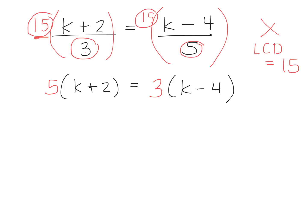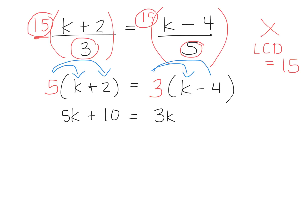What's the next step now that I have brackets? We can't simplify what's inside the bracket — yes, we have to distribute. So: 5 times k, 5 times positive 2, 3 times k, and 3 times negative 4. Now we've removed our brackets.